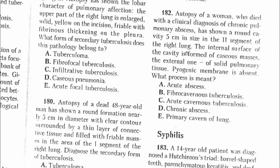Question 182: Autopsy of a woman who died with a clinical diagnosis of chronic pulmonary abscess showed a round cavity inside the second segment of the right lung; the internal surface of the cavity is formed of caseous masses, the external one of solid pulmonary tissue, and the pyogenic membrane is absent. This is acute cavernous tuberculosis, described by the deletion of caseous necrosis and formation of a round cavity. The answer is C.